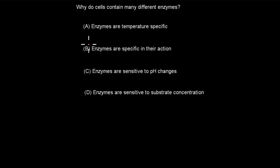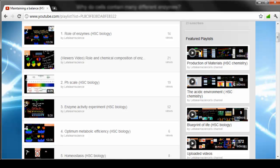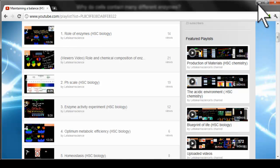The correct answer is B — enzymes are specific in their nature. That's why for every reaction we have a different enzyme, which is why we have to have many different kinds of enzymes. A, C, and D are incorrect because that's not the reason why we have different kinds of enzymes. This question is covered in syllabus dot point number one: Role of enzymes.